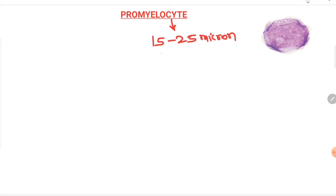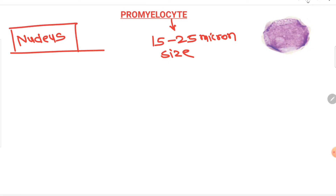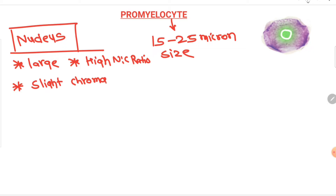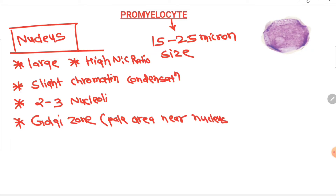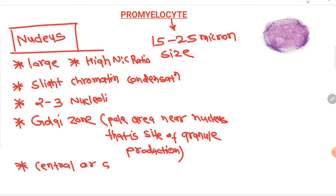The second immature cell is the promyelocyte, measuring 15 to 25 microns. The nucleus is very large with a very high N:C ratio, but as compared to the myeloblast, the chromatin is slightly condensed. Two to three nucleoli are still present. A Golgi zone — a pale area near the nucleus — can be seen, which is the site of granule production. The nucleus is usually centrally located but can be slightly eccentric.